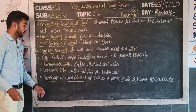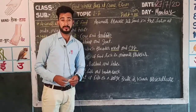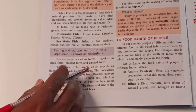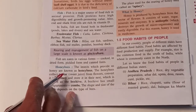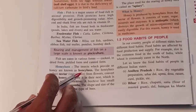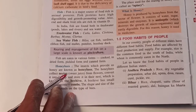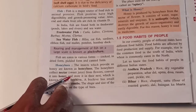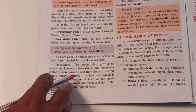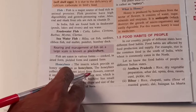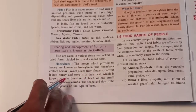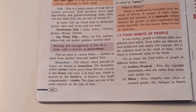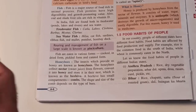Next point is honey bee. The insects which provide us honey are known as honey bees. The honey bee collects nectar - nectar is the sweet juice collected from flowers. It converts the nectar into honey and stores it.